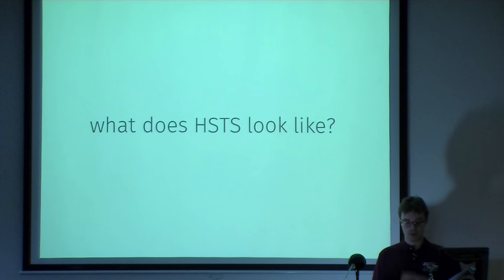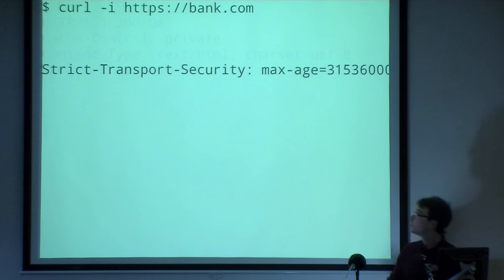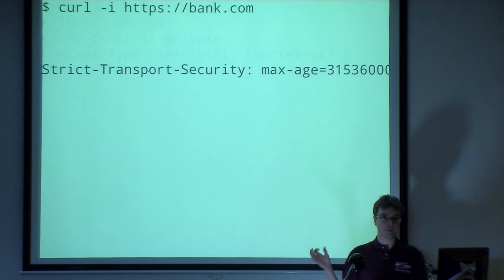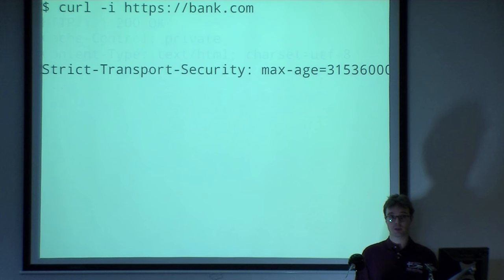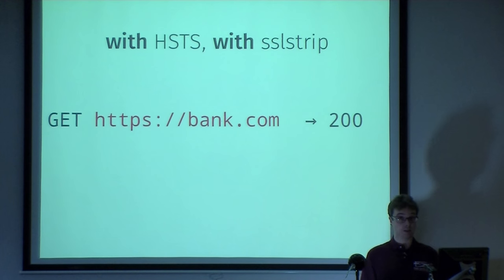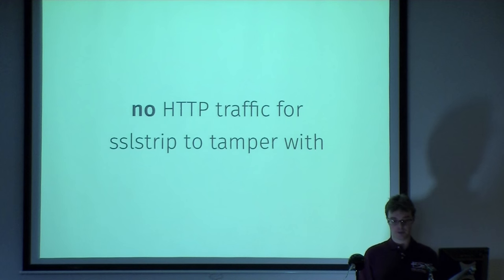How does HSTS prevent this? If you put an extra header on your HTTPS responses called Strict-Transport-Security with the parameter 'max-age' set to some number of seconds, that tells the browser you're available only over HTTPS — please remember this for that many seconds. The browser caches that information, and next time you try to go to the HTTP version of your site, it will immediately go to HTTPS. It's never going to make a connection over HTTP for your domain. SSL strip basically doesn't work anymore because it doesn't have any HTTP traffic to tamper with.